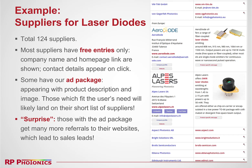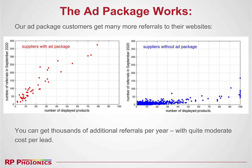Surprise, surprise! Those with the ad package of course get many more referrals to their websites, and these eventually lead to sales leads. It is easy to prove that the ad package really works. Look at these two diagrams. The left one is for suppliers having our ad package — they can get hundreds of referrals per month, meaning thousands per year. With the same number of displayed products, suppliers without the ad package get fewer referrals. So you can get thousands of additional referrals per year just by having our ad package, and that with quite moderate cost per lead.